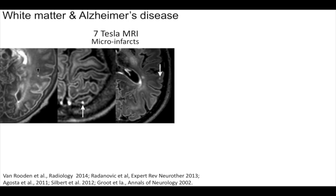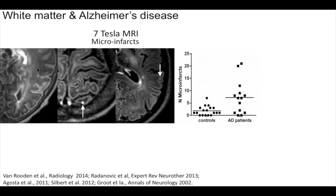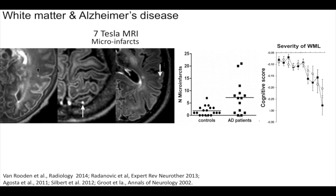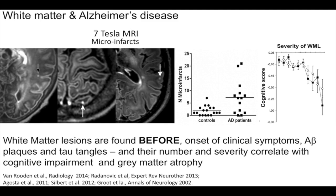What sparked our idea is that MRI scans reveal microinfarcts in the white matter. These increase with aging, but their number is greater in Alzheimer's disease or dementia patients, and their severity almost linearly correlates with cognitive score. Longitudinal analysis shows white matter lesions appear before clinical symptoms, before amyloid-beta plaques and tau tangles, and correlate with cognitive impairment and gray matter atrophy.